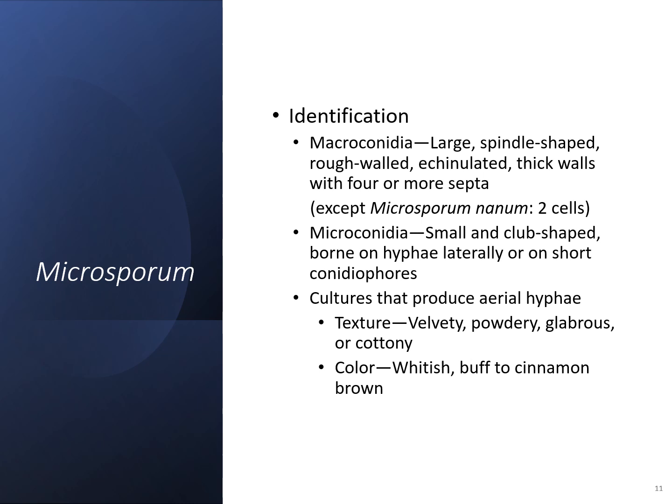With the cultures, they do produce aerial hyphae, so they can be a little bit fluffy. They are velvety, powdery, globose, or cottony. The colors can range from white to buff to cinnamon to brown.